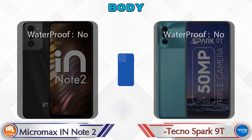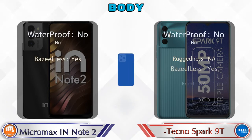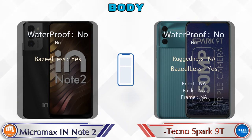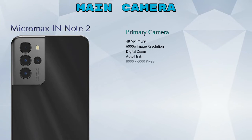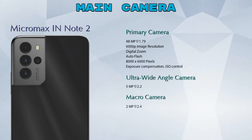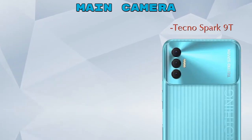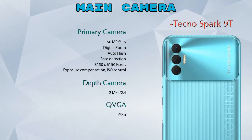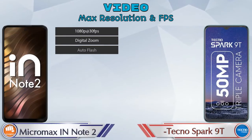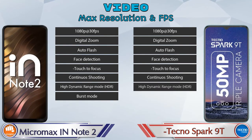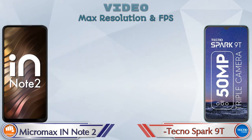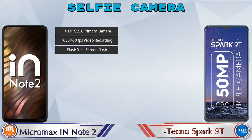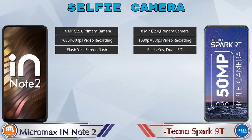Let's see the complete details about the body of both phones. Now let's look at our favorite feature: the camera. For the rear camera, IN Note 2 has four cameras — a primary camera, ultra-wide angle camera, macro camera, and depth camera. Spark 90 has three cameras — a primary camera, depth camera, and a QVGA sensor. For video, IN Note 2 has 8 different types of features and Spark 90 has 7. For the front selfie camera, both phones have a single camera with three different features available.